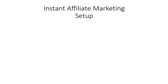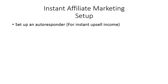Welcome back to Instant Cash Methods. In this video we're going to be talking about getting you set up to make money instantly in affiliate marketing, or as fast as you can. The first thing you're going to do is set up an autoresponder, because you want to make sure that you are set up for instant upsell income. As soon as you make a sale or get someone onto a list, sending them an email is the fastest and most efficient way to generate income.